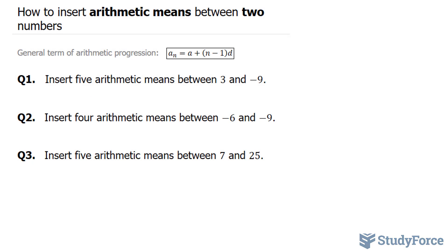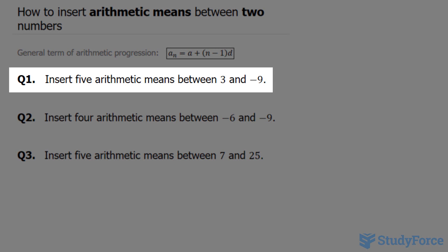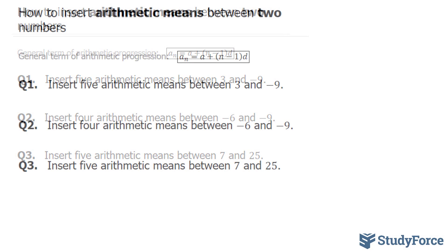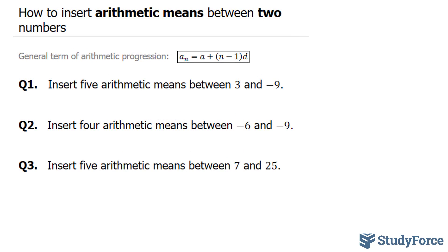In this video, I'll show you how to insert arithmetic means between two numbers. The first question reads, insert five arithmetic means between 3 and negative 9. To do this question effectively, you'll need to know what this formula does. This formula is the general term of an arithmetic progression.